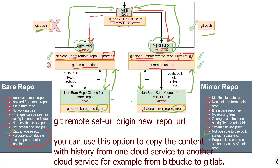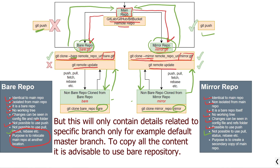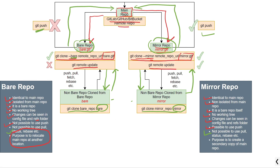The purpose of a bare repository is to relocate the main repository to another location. The git clone --bare option is generally used to create or relocate the main repository at another location. For example, if the main repository is currently at Bitbucket and you want to move it to GitLab, you can utilize this git clone command. The purpose of a mirror repository is to create a secondary copy of the main repository.